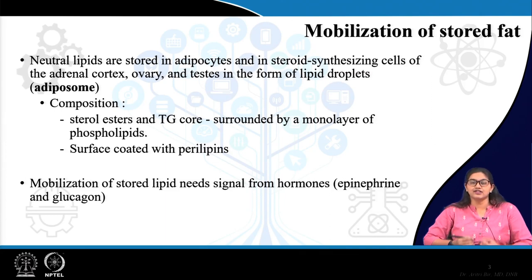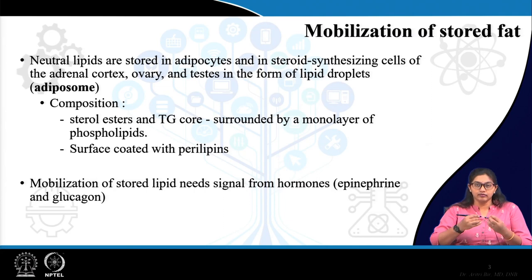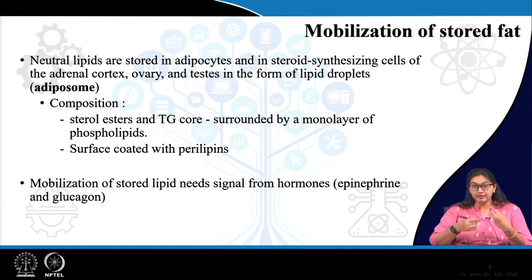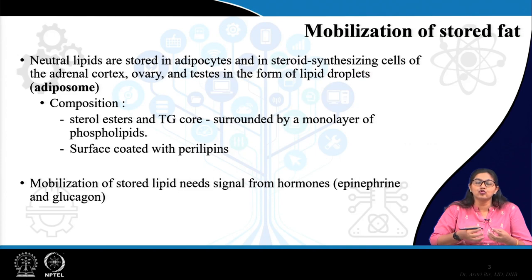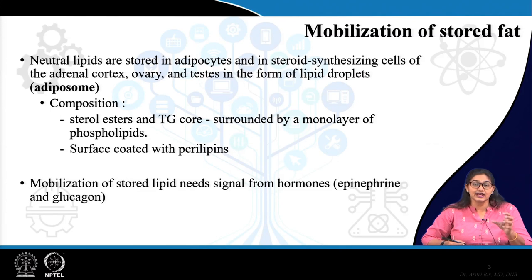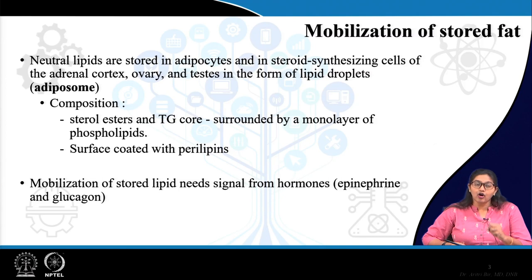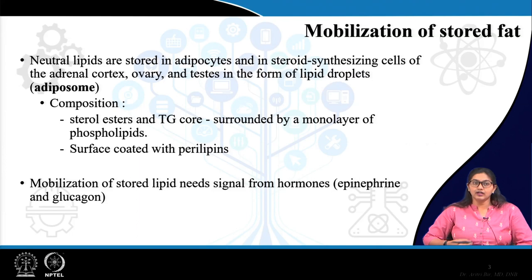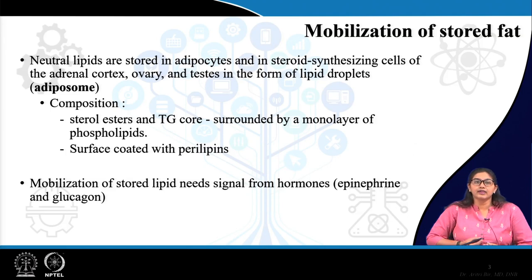This mobilization from storage tissues mostly occurs through hormonal signals. When there is depletion of the ready-made energy supplier glucose or carbohydrate products, those depleted stores give a signal. Basically, low blood glucose gives a signal via hormones like epinephrine and glucagon. These hormones are used in mobilization of stored lipids, and the lipids come out from these adiposomes.